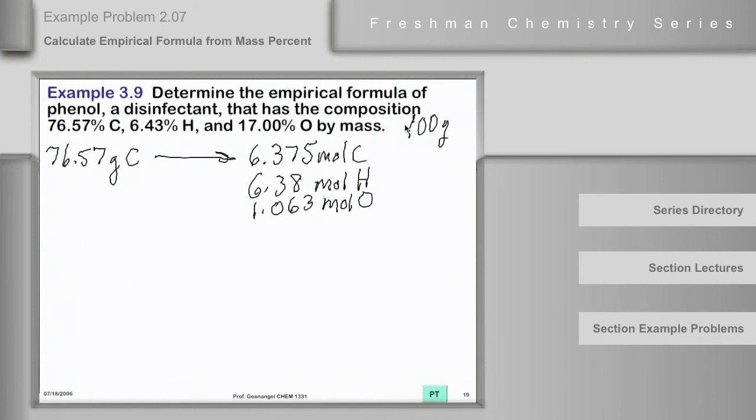So that gives us carbon 6.375, hydrogen 6.38, oxygen 1.063. Divide everything through by the smallest.